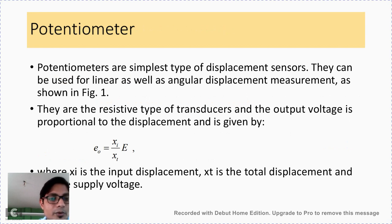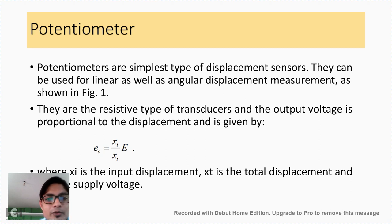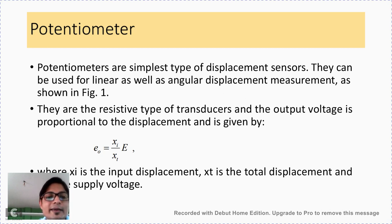Potentiometers are the simplest type of displacement sensors. They are contact sensors and can be used for linear as well as angular displacement measurement. They are resistive type transducers. The output voltage is proportional to the displacement and is given by E₀ = (Xᵢ / Xₜ) × E, where Xᵢ is the input displacement, Xₜ is the total displacement, and E is the supply voltage.